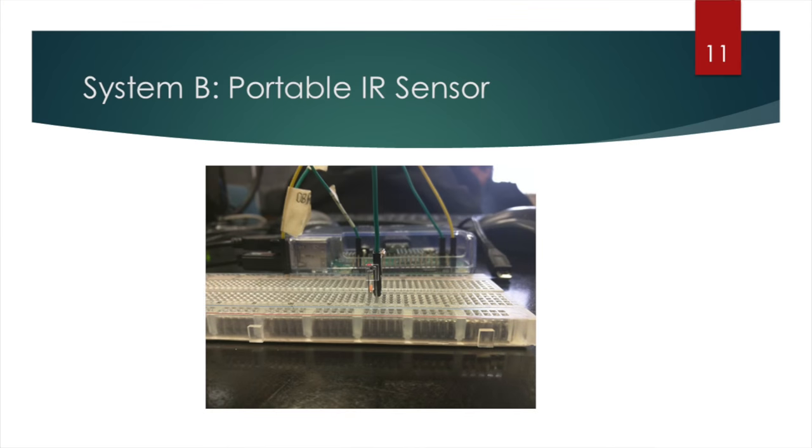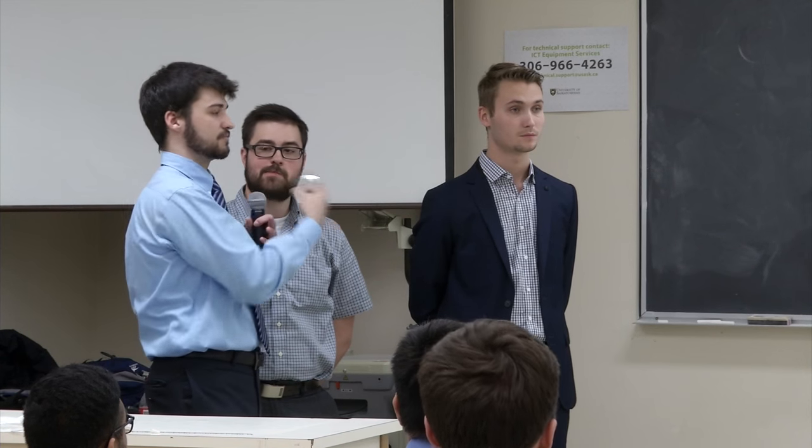This is the portable IR sensor. The sensor detects the IR light and sends a signal to the Raspberry Pi behind it, which then sends a Bluetooth signal to the server saying it has detected light.